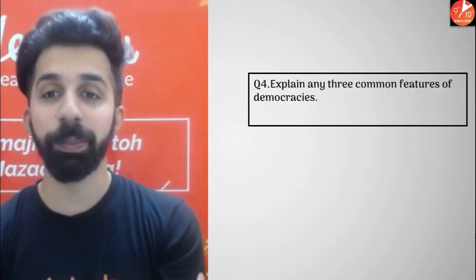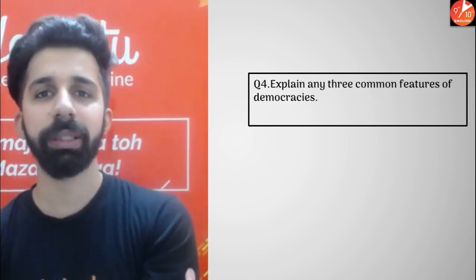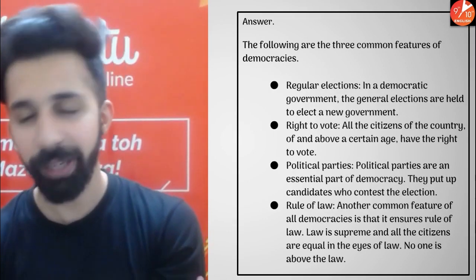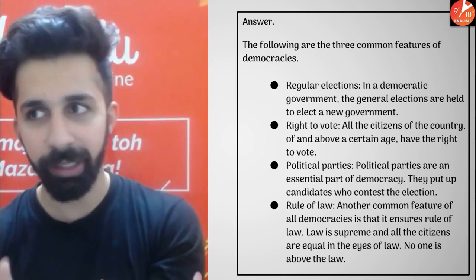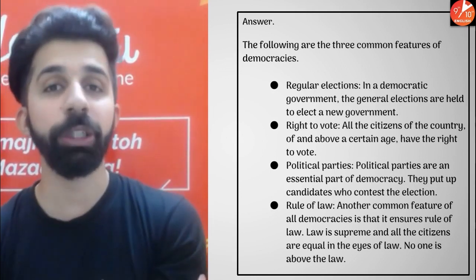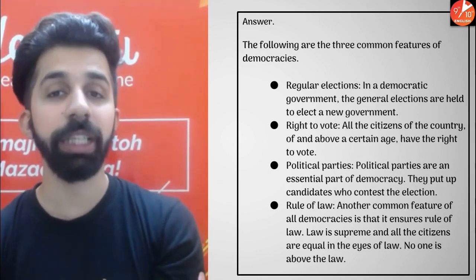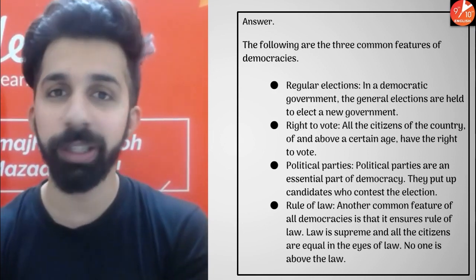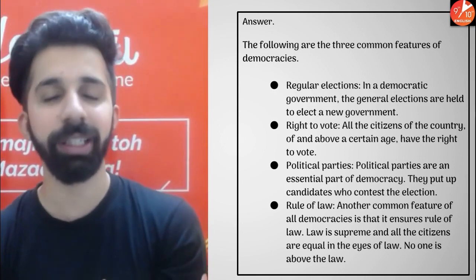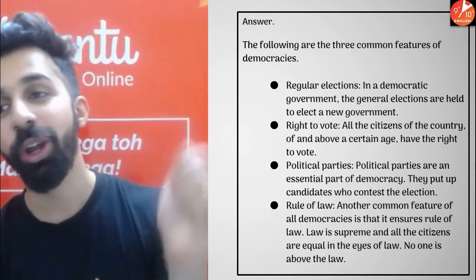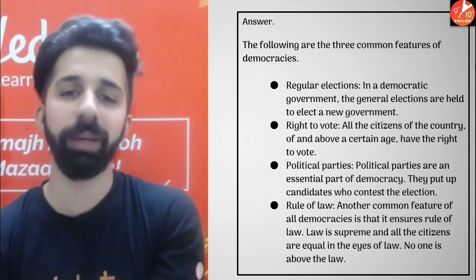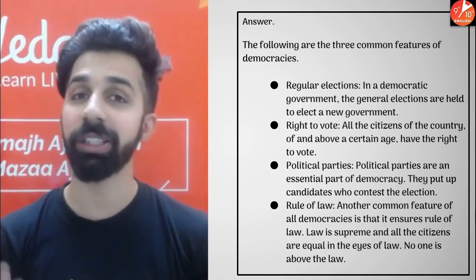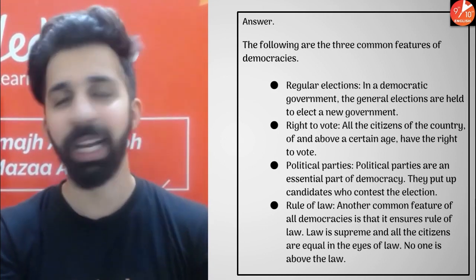Next question: Explain any three common features of democracies. First, regular elections — in India, after every five years, general elections are conducted and a new government is elected. Second, right to vote — all citizens above the age of 18 in India have the right to vote without any discrimination. Third, political parties — they are an essential part of democracy as they participate in elections and, if they win, form and run the government. Rule of law — every democracy is legitimate in nature; there are rules and regulations to follow, and no one is above the law.